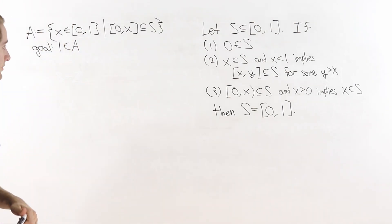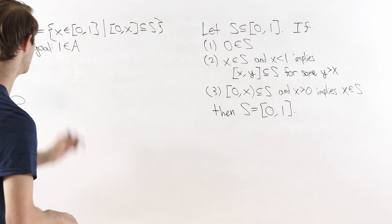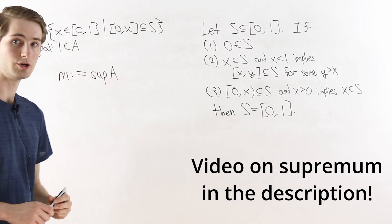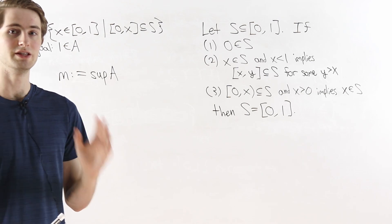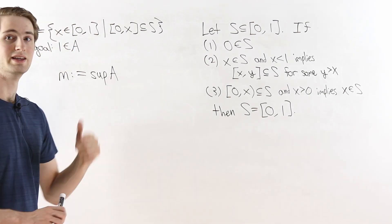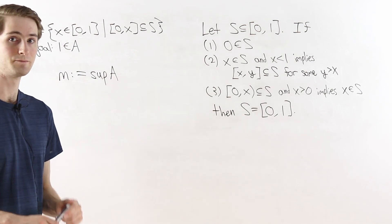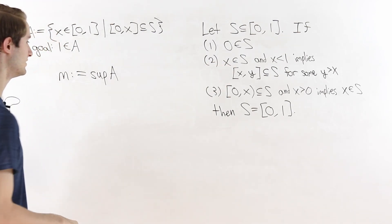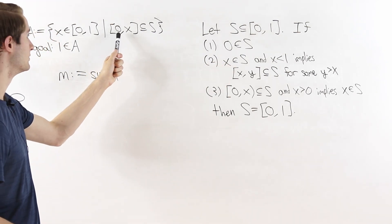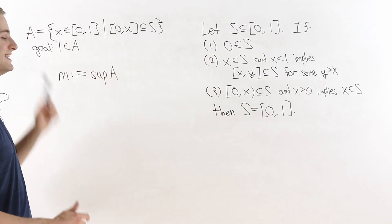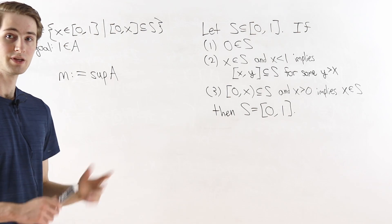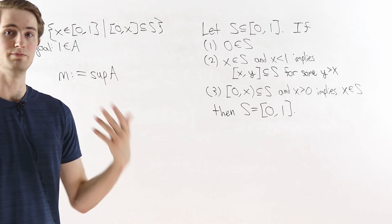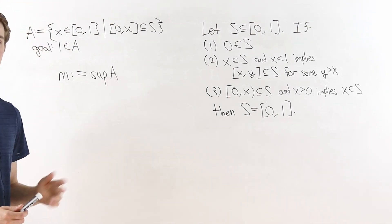Let's get started with the proof. The first thing I'm going to do is define a number m which is the supremum of A — the least upper bound, the smallest number that's bigger than every number in A. We know this supremum m exists for two reasons: first, zero is in the set, which means the closed interval from zero to zero is a subset of S, so zero is in A and A is non-empty. Second, we're only taking numbers x from zero to one so the set is bounded. Every non-empty bounded set has a supremum, so m exists.